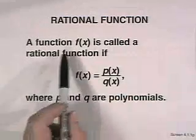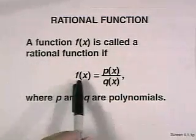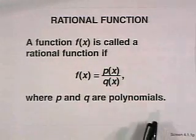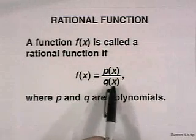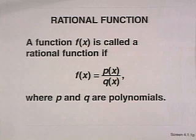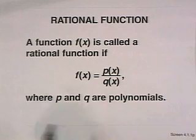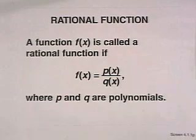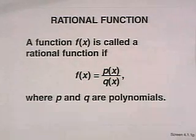A rational function is a function of the form p of x over q of x. So it's a fraction where p and q are polynomials. We know from discussion of fractions before that q of x, if it's zero, will make the function f undefined.